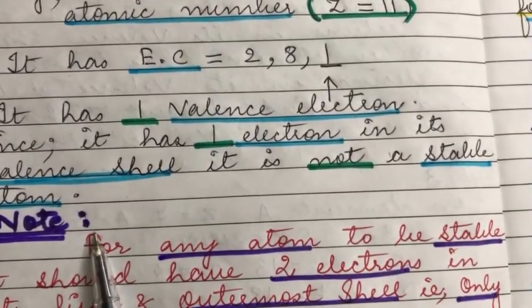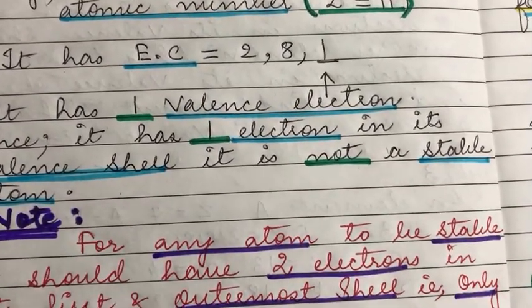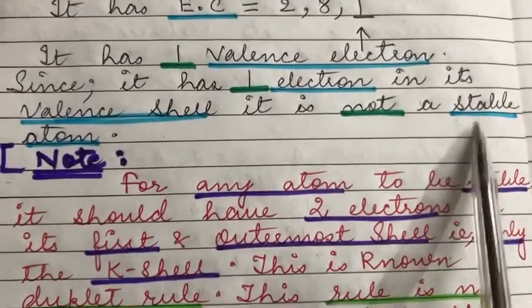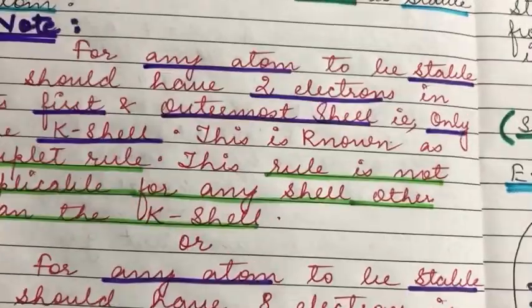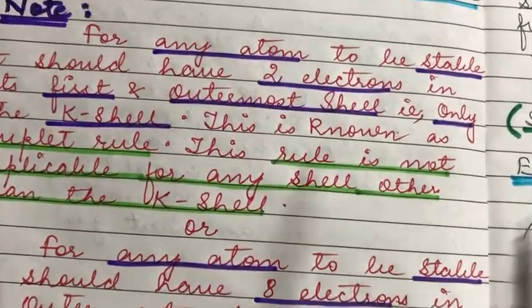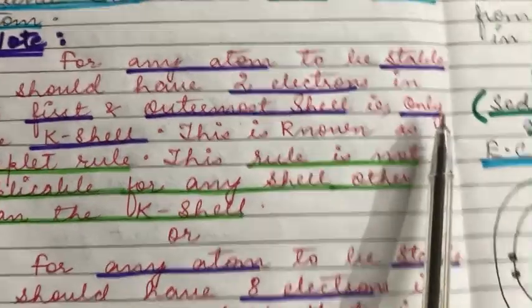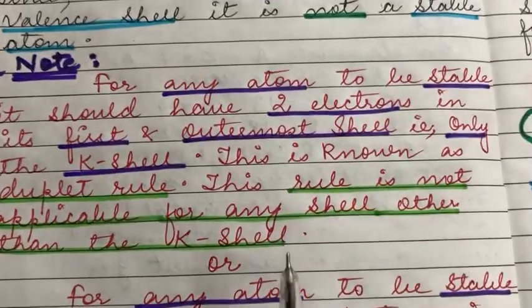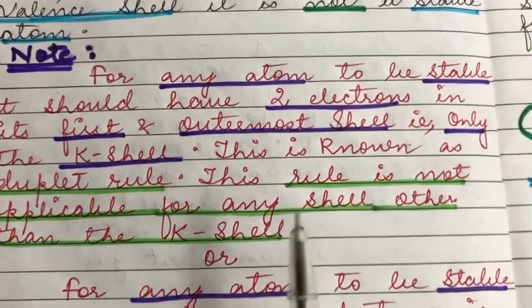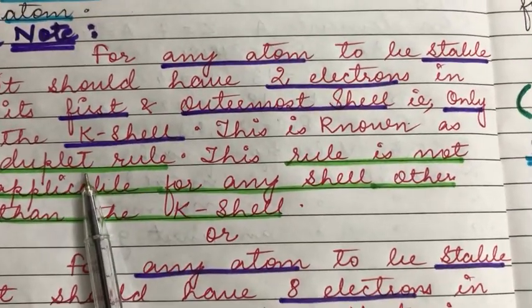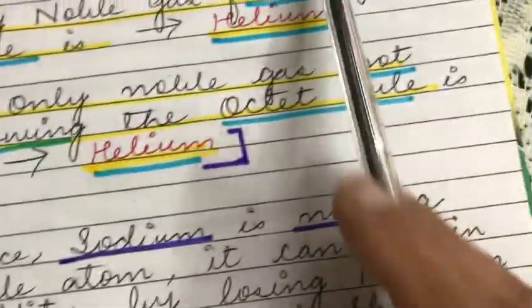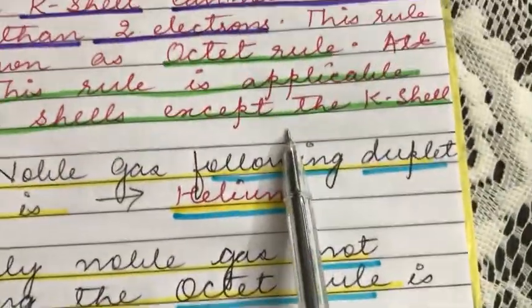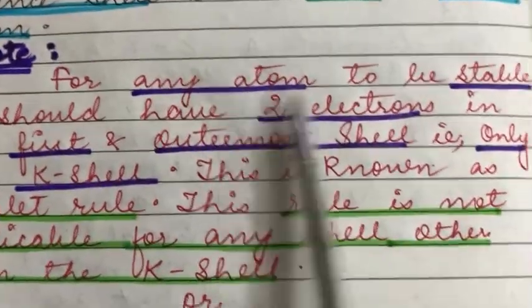But sodium is not a stable atom. To understand why it is not stable, we need to recall what is meant by stability. We have two rules of stability: one is known as the duplet rule and the other is known as the octet rule.